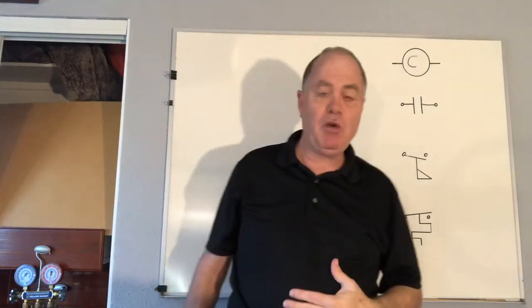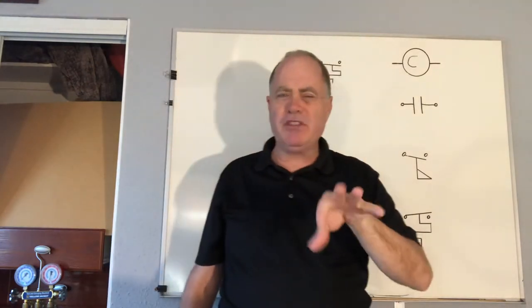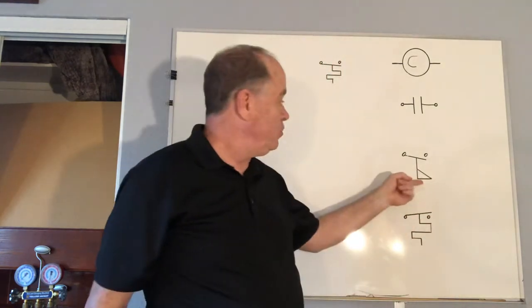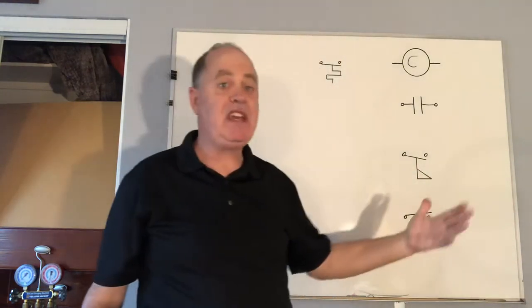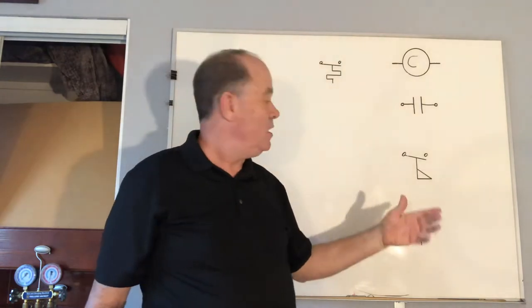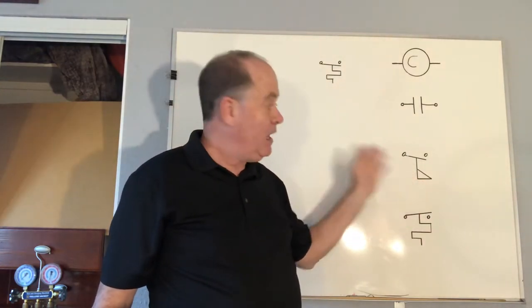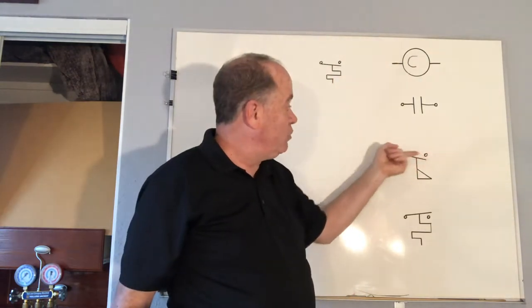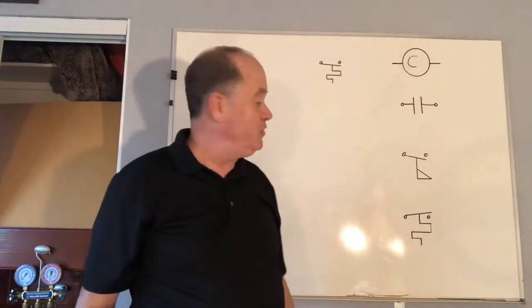Something to be aware of is that quite often the symbols resemble the actual part. This is a flow switch, and when used for air, it's referred to as a sail switch. You can see how it kind of looks like a sail. And when a fan blows, this would close an electrical set of contacts sending an electrical signal down the line.